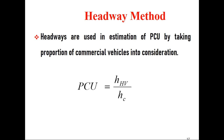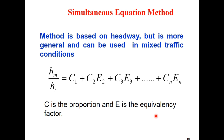Headways are also used in estimation of PCU by taking the proportion of commercial vehicles into consideration. The PCU by this Headway Ratio method is given by the average headway between heavy vehicles divided by the average headway between two cars. It is a simple method, but measurement of headway is difficult in mixed traffic conditions. The Simultaneous Equation method is also based on headway but is more general and can be used in mixed traffic conditions, rather than being limited to only cars and trucks.